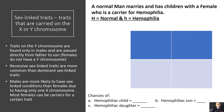Let's take a deep dive into sex-linked traits — these are traits that are carried on an X or a Y chromosome. Traits on a Y chromosome are found only in males and are passed directly from father to son. Remember, females do not have a Y chromosome, so a male has an X and a Y chromosome, and if the father has that trait, it's passed directly to his son. Recessive sex-linked traits are more common than dominant sex-linked traits, and males are more likely to have sex-linked conditions than females due to having only one X chromosome.